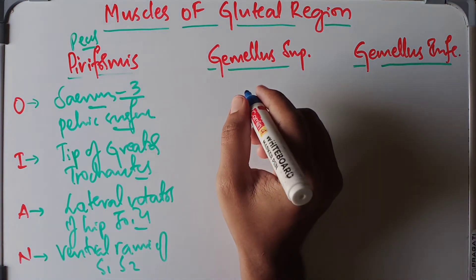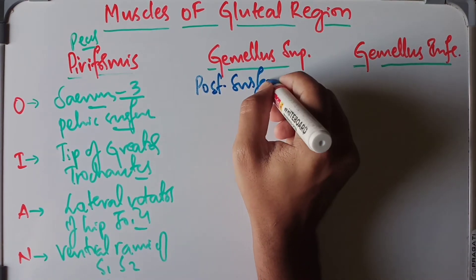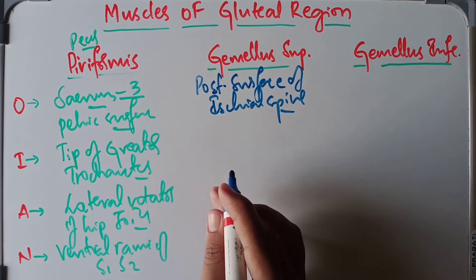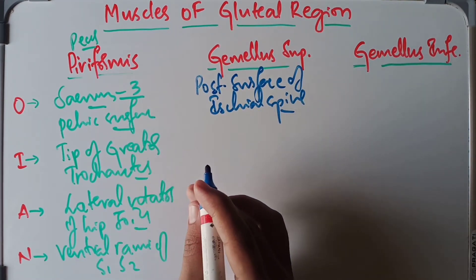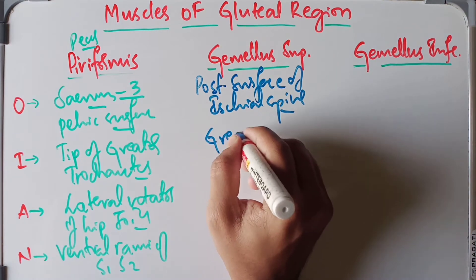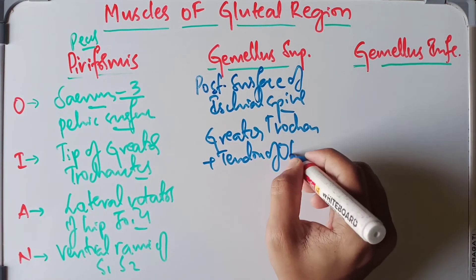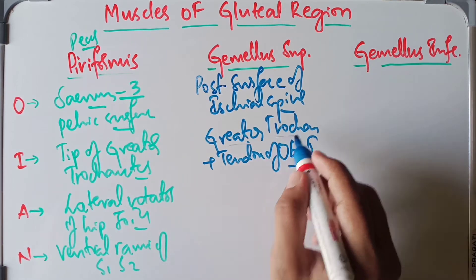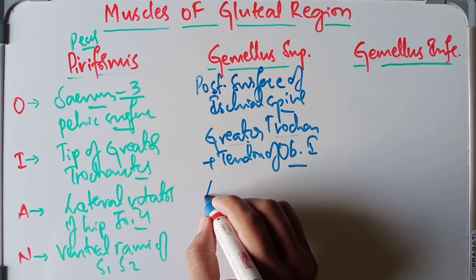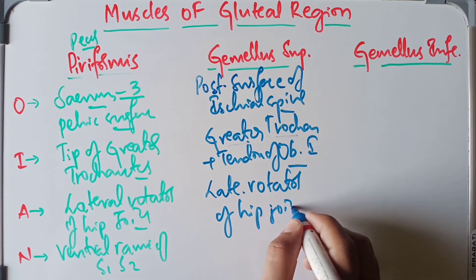Moving on to the gemellus superior. The origin comes from the posterior surface of the ischial spine. It is inserted into the medial surface of the greater trochanter along with the tendon of the obturator internus. The action of the gemellus superior is lateral rotation of the hip joint, same as the piriformis.